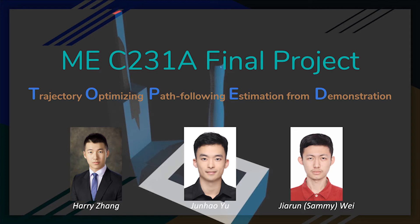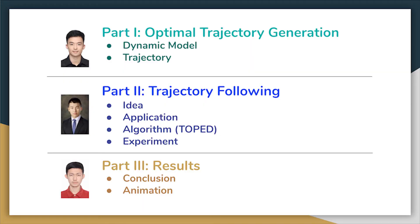Here's the presentation of MEC 231A final project. In this project we have three parts. The first part is to generate an optimal descent trajectory for a rocket landing. The second part is to follow this trajectory as close as possible under model mismatch and noise and different initial conditions using an MPC algorithm called Trajectory Optimizing Path Following Estimation from Demonstration, and we call that TOEPAD for short.